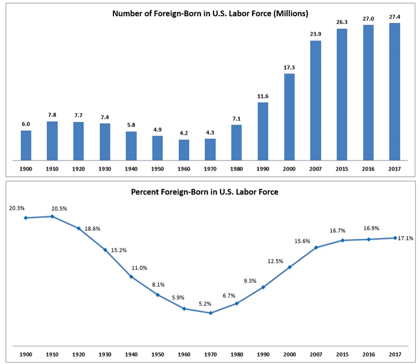The proponents of the Hart-Cellar Act argued that it would not significantly influence United States culture. President Johnson called the bill 'not a revolutionary bill. It does not affect the lives of millions.' Secretary of State Dean Rusk and other politicians, including Senator Ted Kennedy, asserted that the bill would not affect U.S. demographic mix. However, the ethnic composition of immigrants changed significantly following the passage of the law.